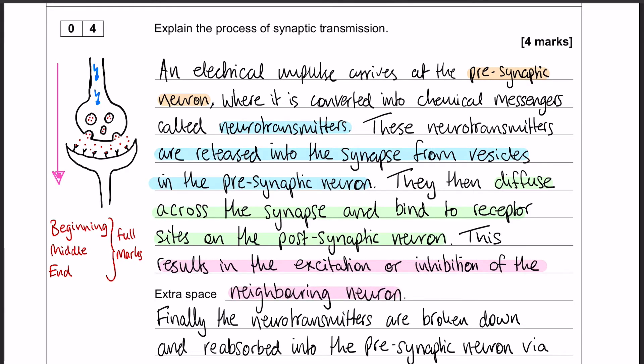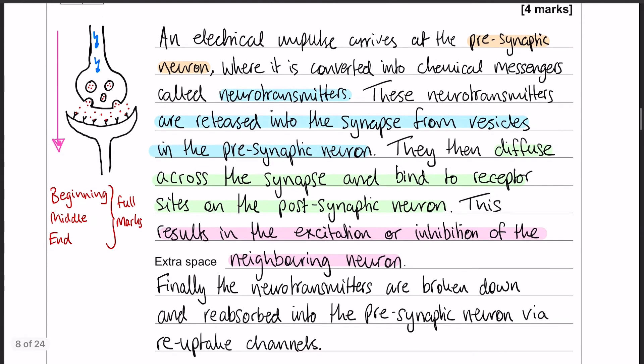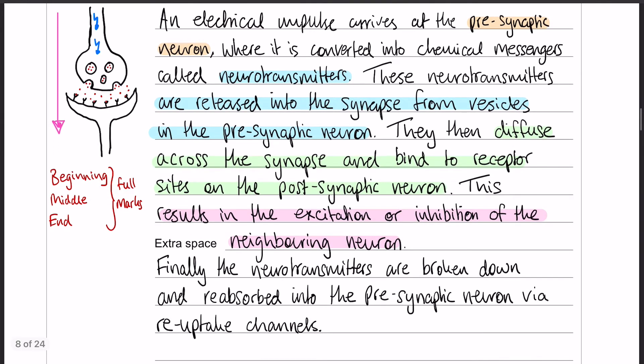That then results in the excitation or inhibition of the neighboring neuron. And then just to finish off that whole process, the neurotransmitters are broken down and reabsorbed via reuptake channels.